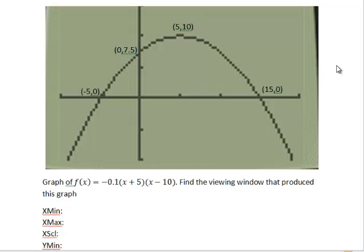In this problem, we've been given the graph of a function with some labeled points. In this case, we have a quadratic function. I see that we have a parabola that's opened down. We've been given two x-intercepts labeled, that's negative 5, 0, and 15, 0.